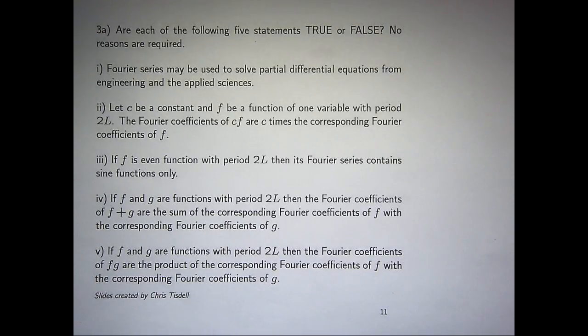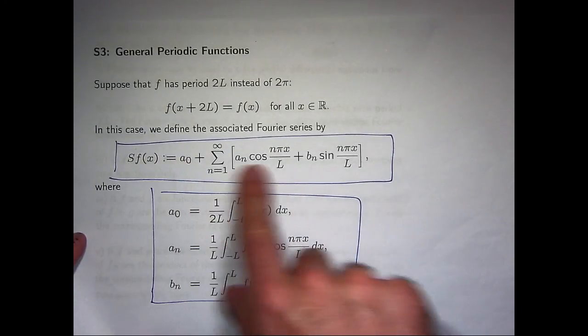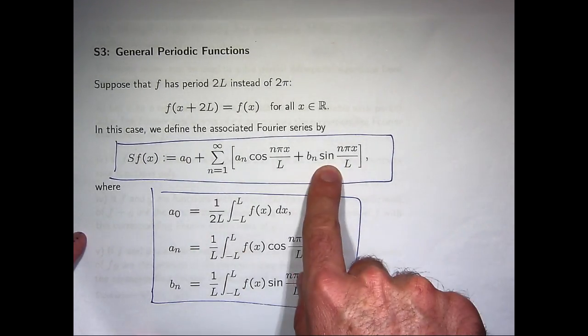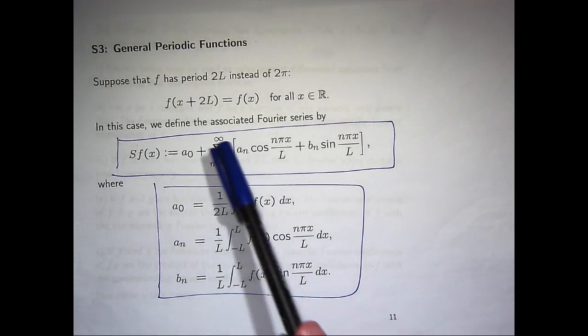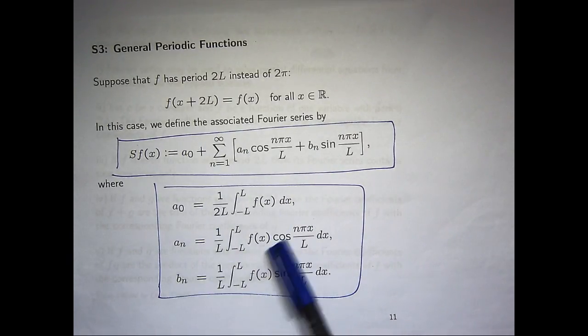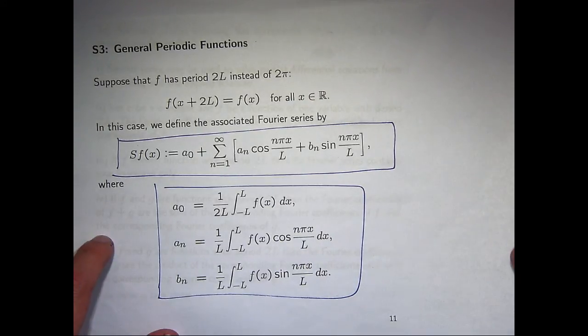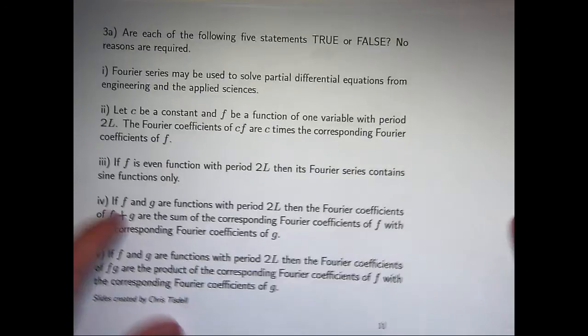Now remember a Fourier series, just to jog your memory, is a special series involving cosines and sines. And the way you compute a Fourier series is you compute the coefficients of those cosines and sines. The a noughts, the a n's and the b n's. And you calculate those through integration. Okay, well, let's see if we can work through this one.